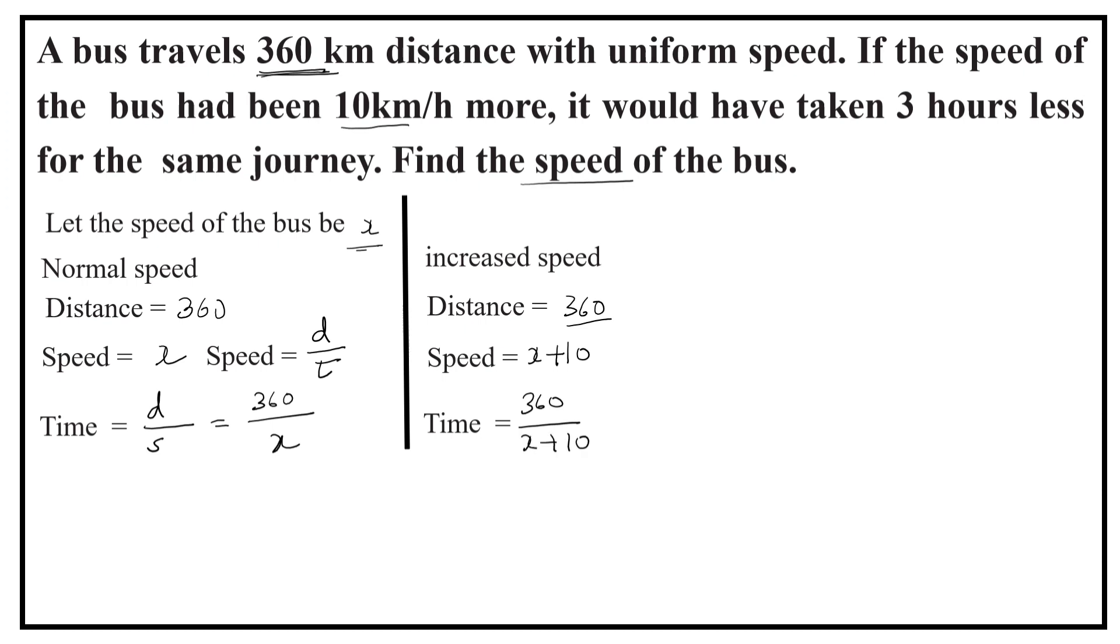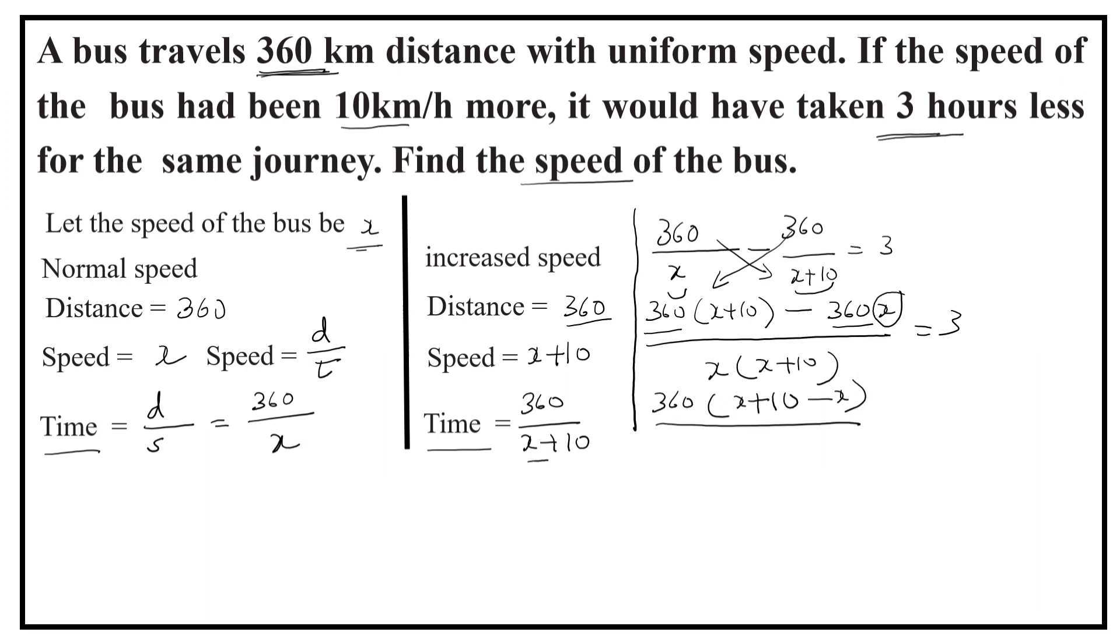the bus would take 3 hours less for the journey. So, 360 by x minus 360 by x plus 10 is equal to 3. 360 into x plus 10 minus 360 into x upon x into x plus 10 is equal to 3. 360 into x plus 10 minus x upon x square plus 10x is equal to 3.